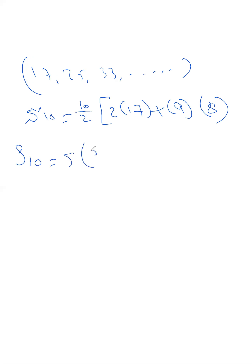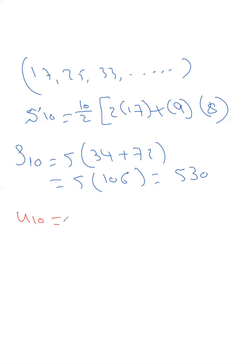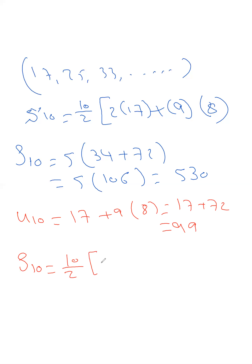So S_10 equals 5 times 34 plus 72, which is 5 times 106, equals 530. You can also find it using the other rule, but you first need to find u_10, since u_10 will be the last term. u_10 equals u_1 plus 9 times d, which is 17 plus 72, equals 89.